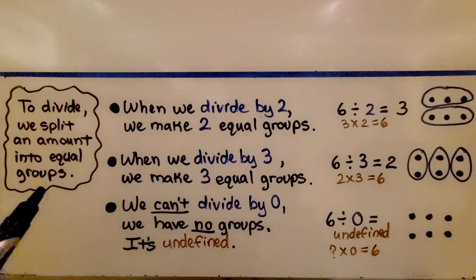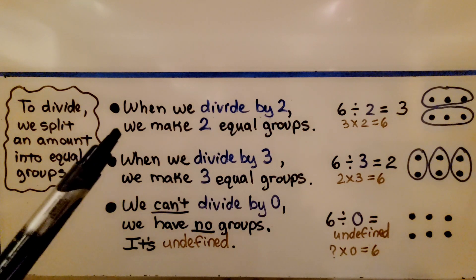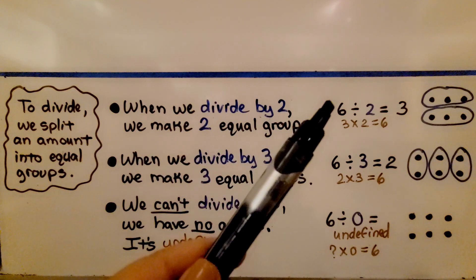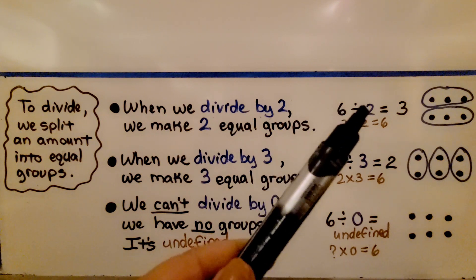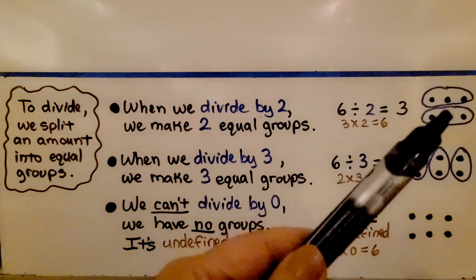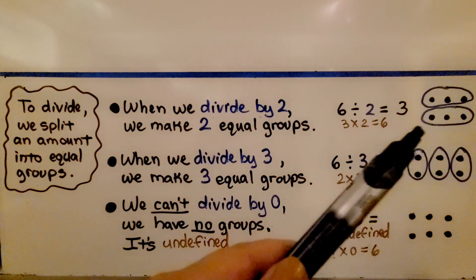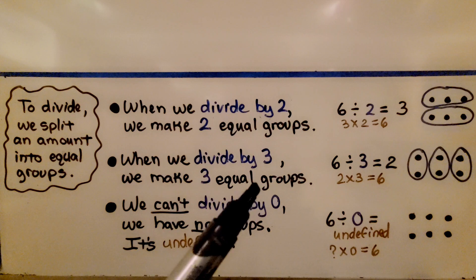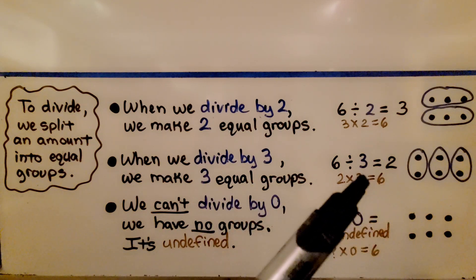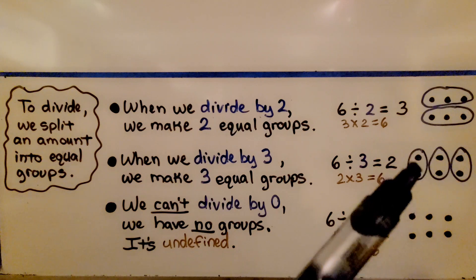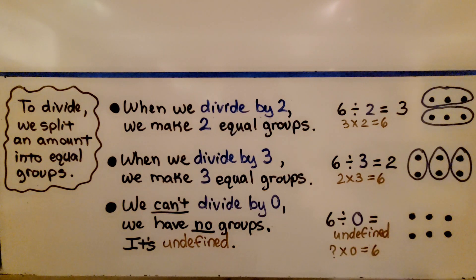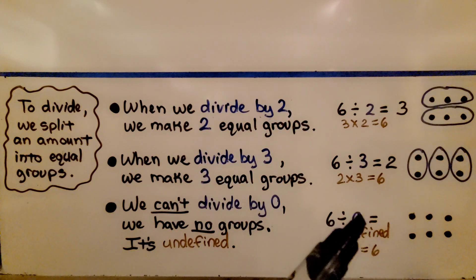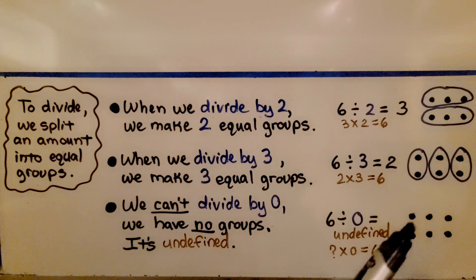To divide, we split an amount into equal groups. When we divide by two, we make two equal groups. Here's six divided by two: we have six counters, divide into two equal groups, there's three in each group, so our quotient is three. When we divide by three, we make three equal groups, and our quotient is two. We can't divide by zero — we have zero groups. Six divided into zero groups doesn't make sense. It's undefined.